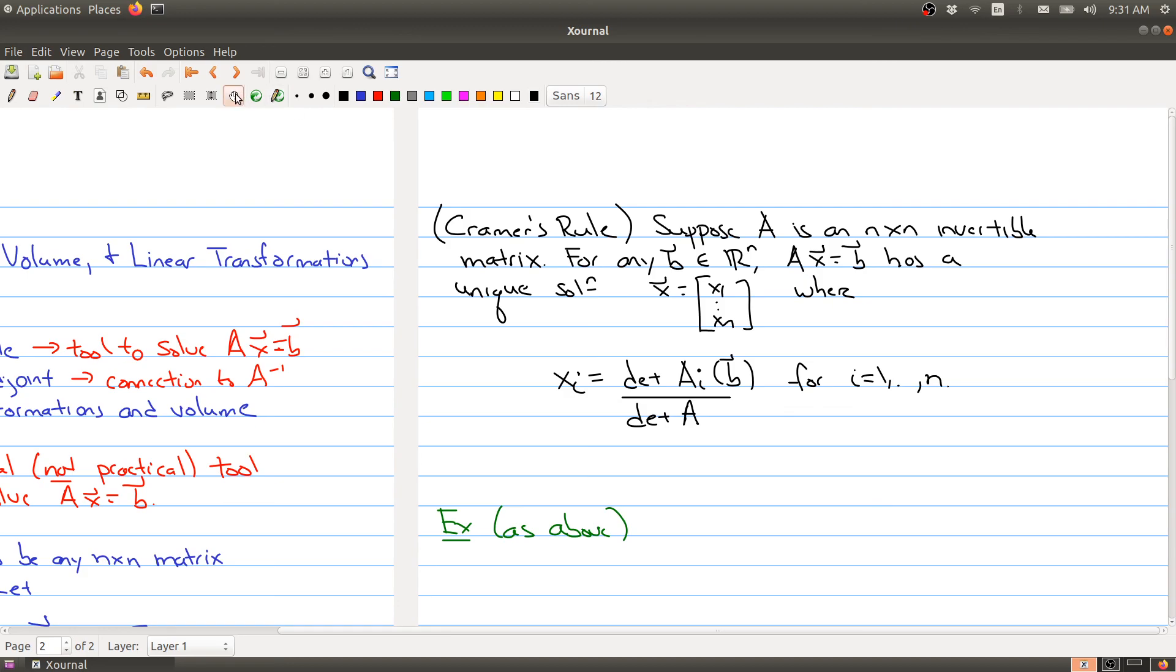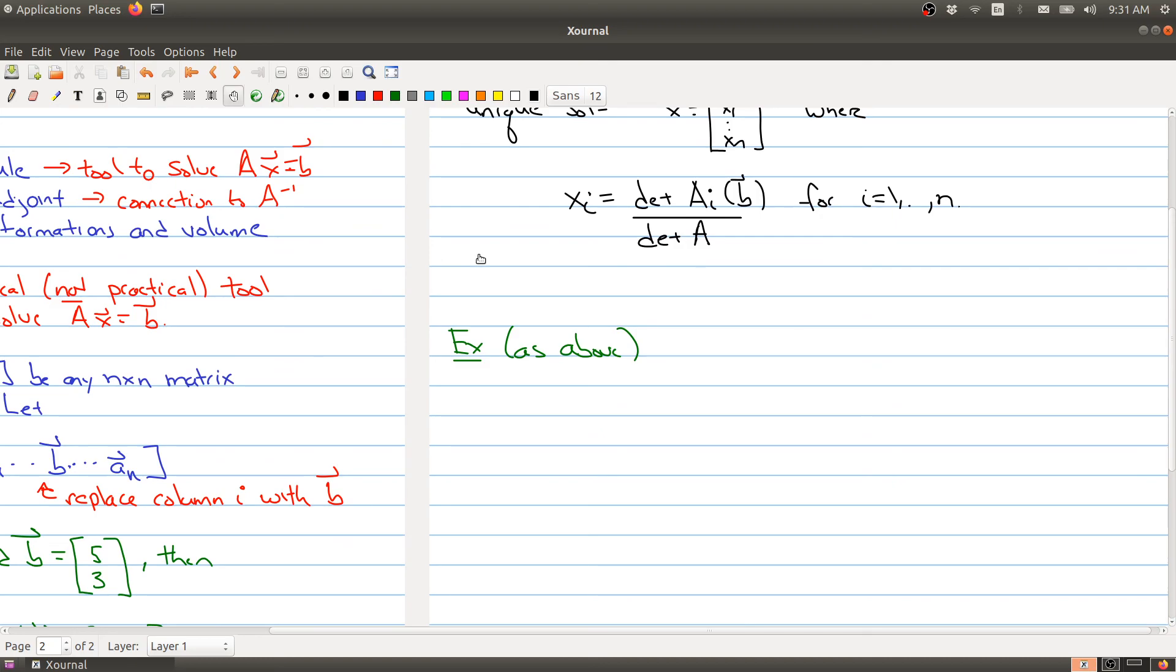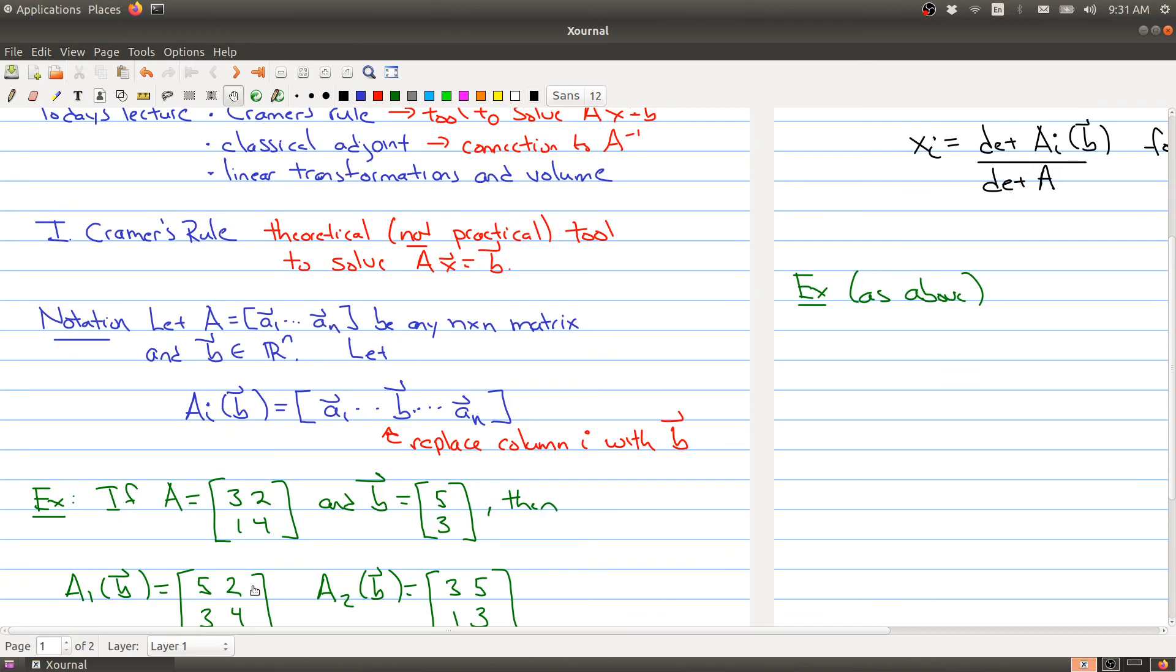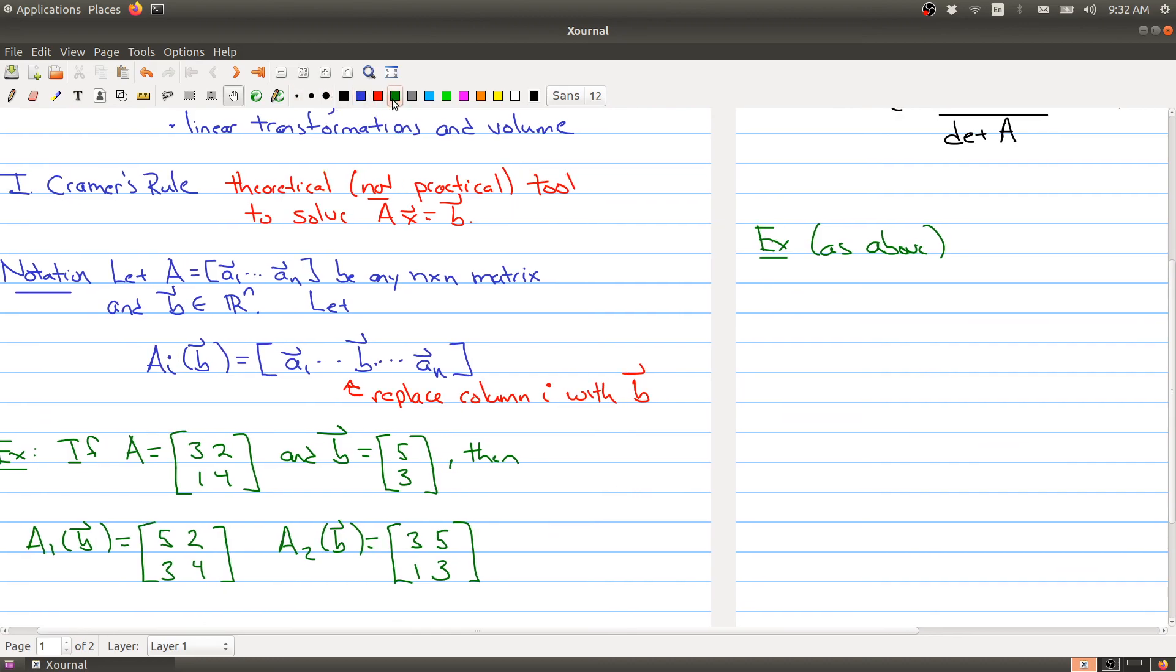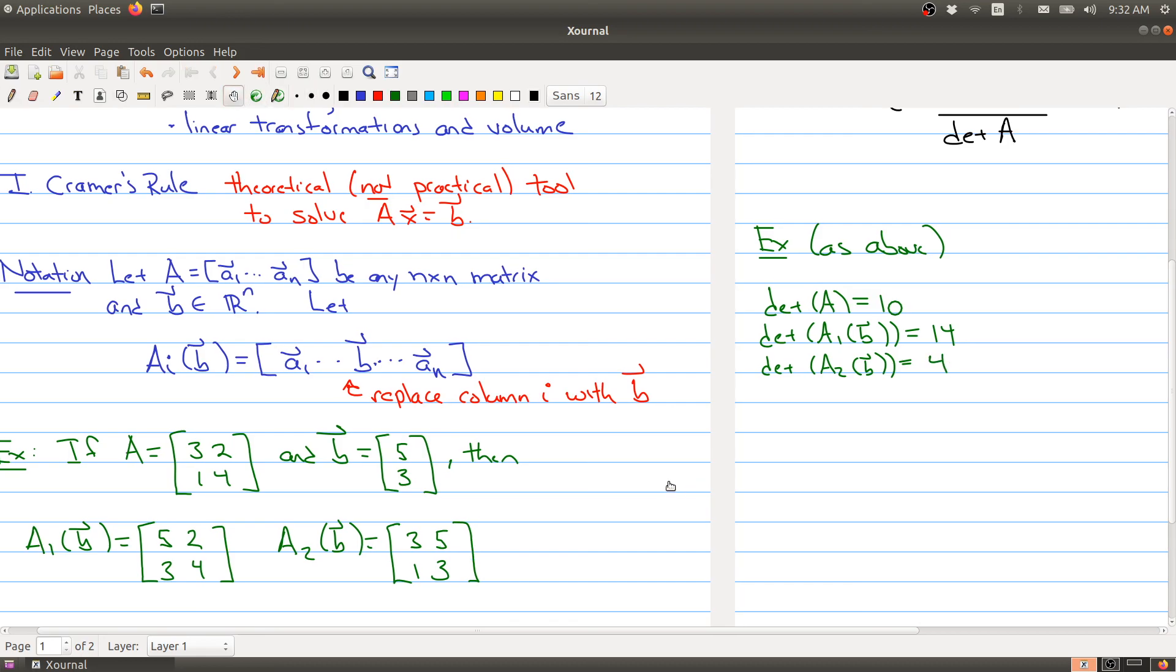So just to illustrate this, we had our three matrices: matrix A, matrix A_1(B), and matrix A_2(B). I can compute all of these determinants. The determinant of A is 3 times 4 minus 2, which is 10. The determinant of A_1(B) is 5 times 4, which is 20, minus 3 times 2, giving me 14. And the determinant of A_2(B) is 3 times 3, which is 9, minus 1 times 5, which gives me 4.